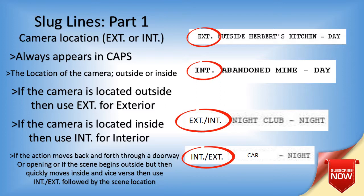Let's take this with the nightclub example. If the camera is outside the nightclub and the scene has to do with a bunch of friends standing outside on the sidewalk waiting in line to get inside the club, then the bouncer lets them in and they walk inside — so it's EXT./INT. You started outside on the sidewalk, they talk to the bouncer, they go inside and something happens. That's how you do a combination of both.